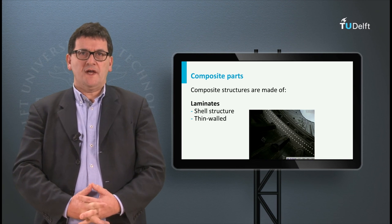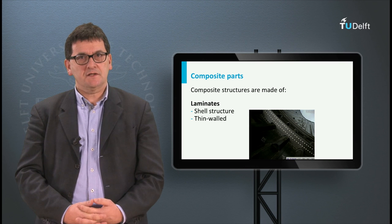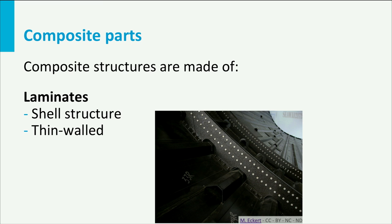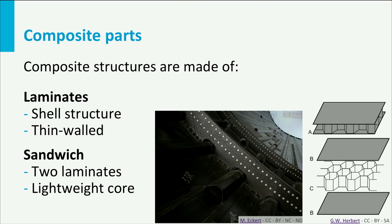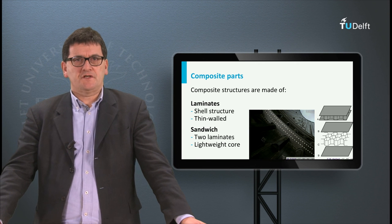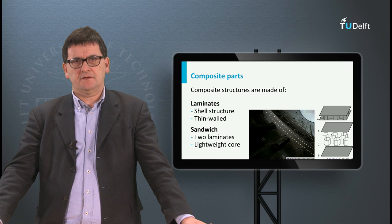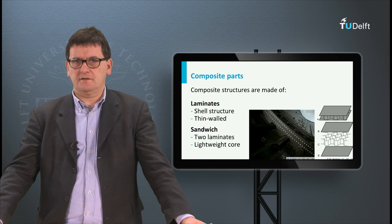In composite structures we see two main material concepts: laminates and sandwiches. Laminates are made of multiple composite layers stacked together, and the final thickness of such a laminate is usually small, in the order of a few millimeters. The other concept is the sandwich: it has two thin face-sheet laminates with a core material in between. The core material can have a honeycomb structure or it can be a foam. Sandwiches are often used when a high bending stiffness is required, and the height of the sandwich has a large impact on that bending stiffness.